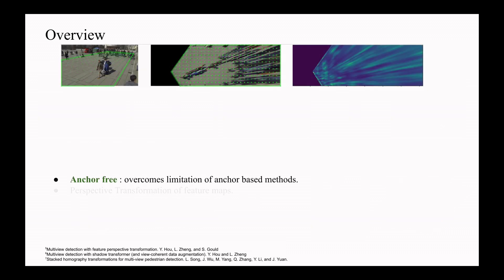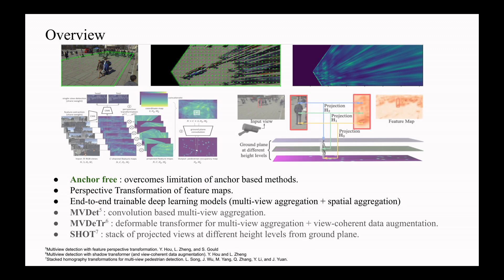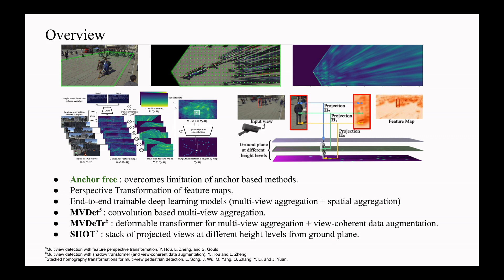Second method, which is anchor-free detection methods, overcomes the limitation of anchor-based methods. In this, perspective transformation is applied on the feature maps for each camera view. These methods are end-to-end trainable deep learning-based methods, where first, feature maps from all the views are combined for multi-view aggregation and then spatial aggregation to estimate final occupancy map. MVDET is the first baseline of this architecture which uses convolution for multi-view aggregation.